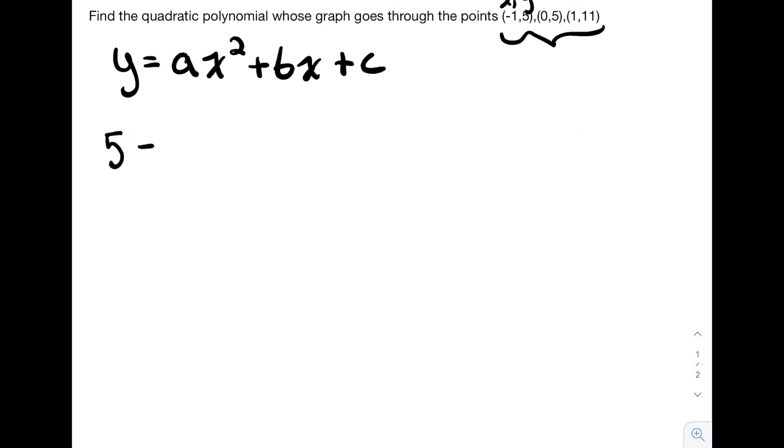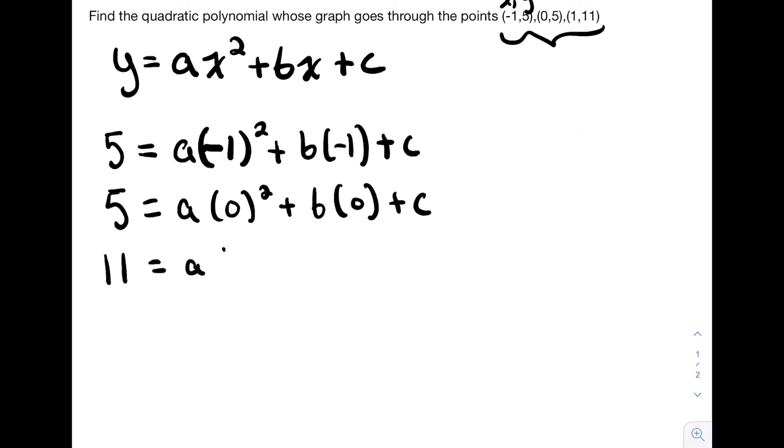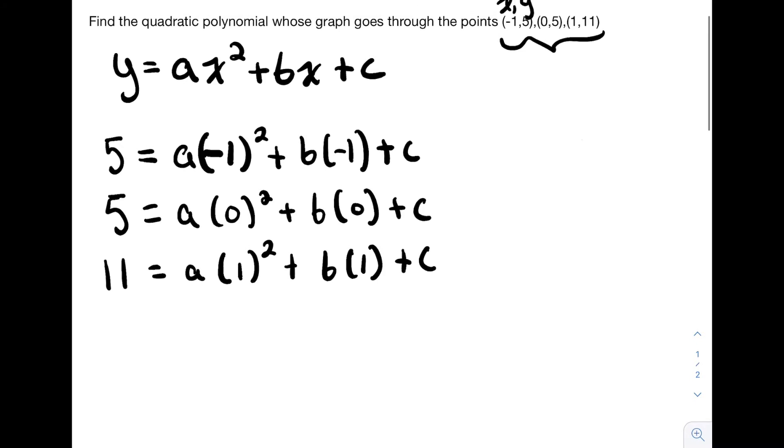So the first formula will be 5 equals a(-1)² plus b(-1) plus c. The second will be 5 equals a(0)² plus b(0) plus c. And our last one will be 11 equals a(1)² plus b(1) plus c. So you can see I just went ahead and plugged our three points into the formula.